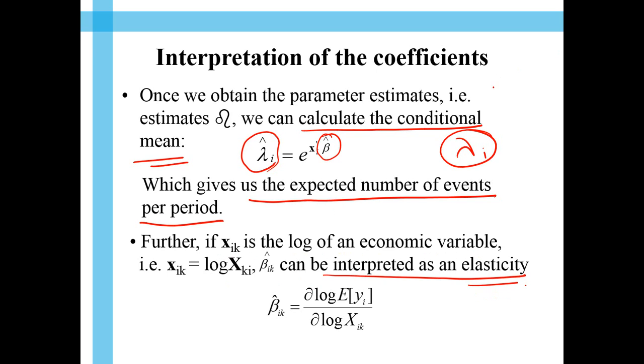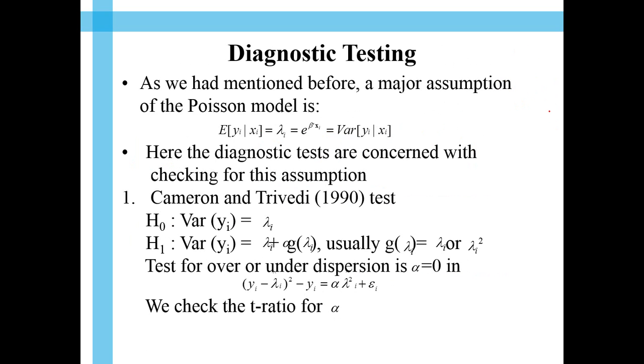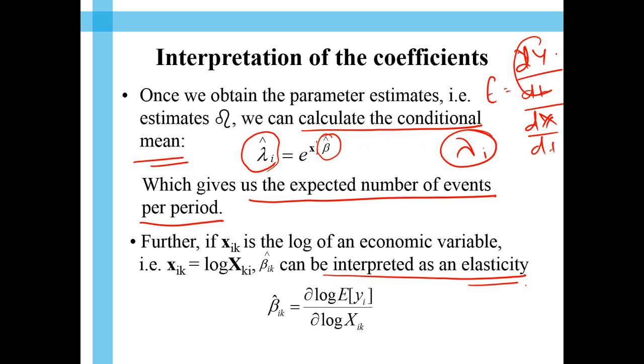So, elasticity is something like, dy by d. So, it's just a change of something with respect to change of something. Let's say dy by dt divided by dx by dt. That means, change of y with respect to t divided by change of x with respect to t. So, if you take the ratio of that, you take elasticity.